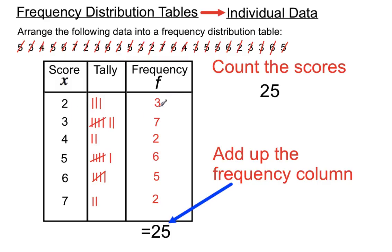So we've got scores, and now we have a column indicating how many times each of those scores occurred. So that's officially a frequency distribution table when we have individual data.